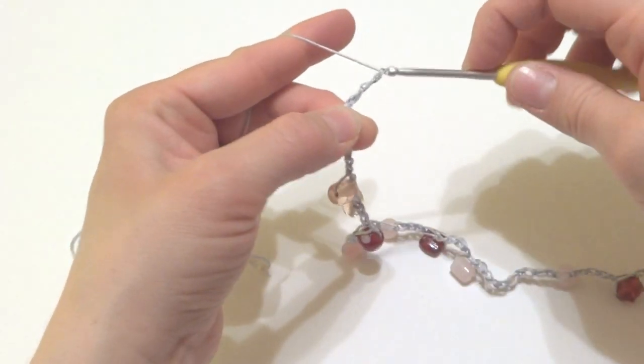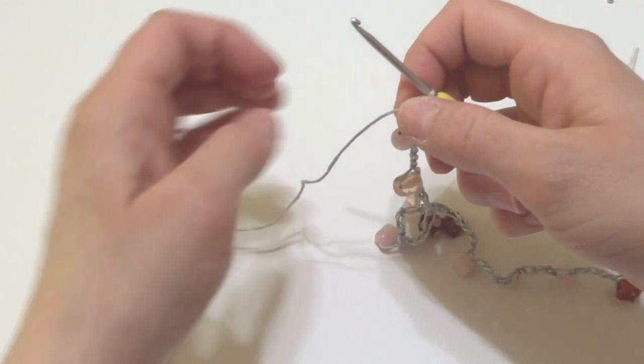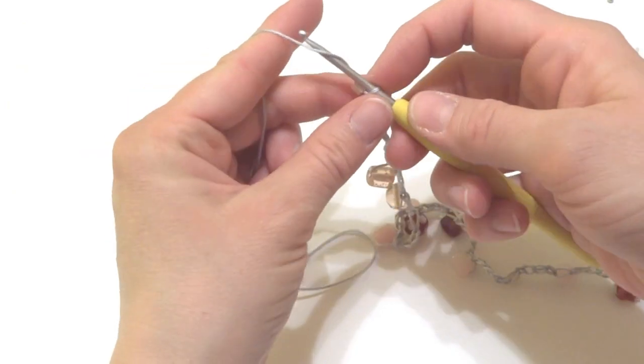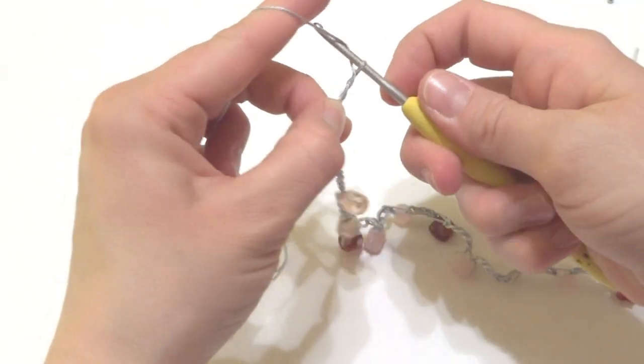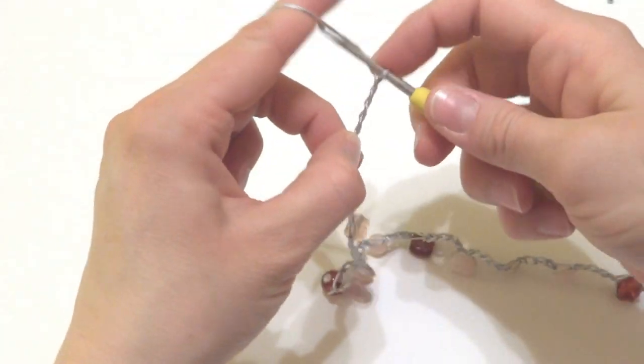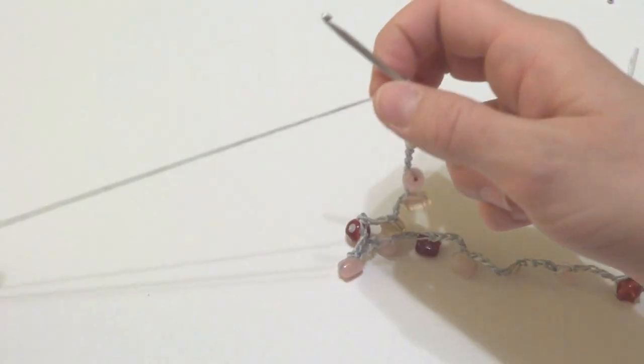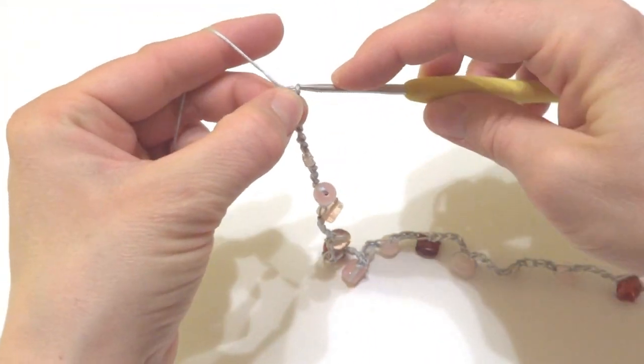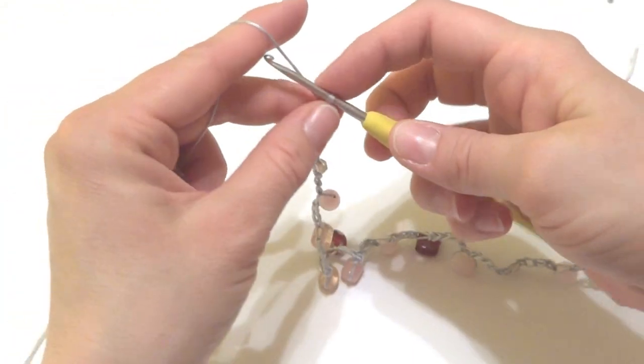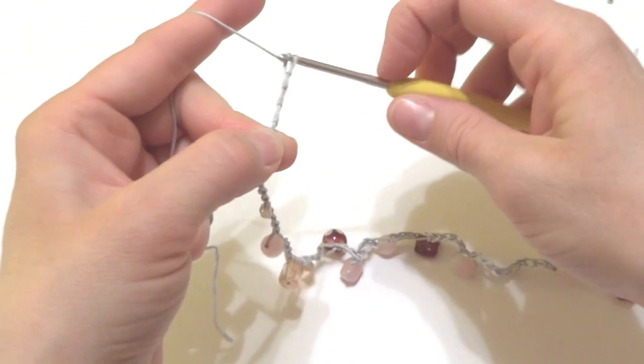So we're just going to put a few chains in there. Slide the next bead up. Complete the chain. I'm putting a few extra in here than I did before, but that adds to the kind of random texture that we're after. Last bead that we have on here.